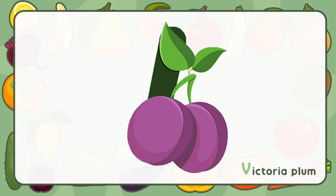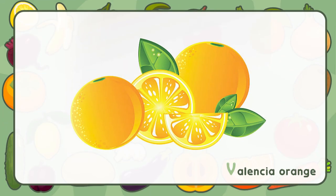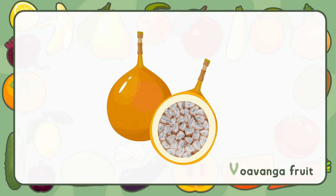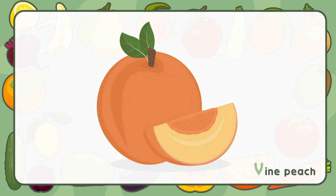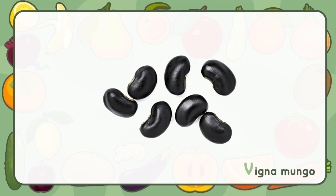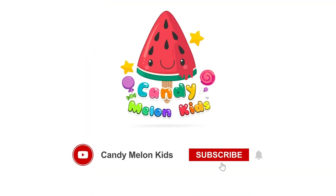Victoria Plum. Velvet Apple. Valencia Orange. Vavingay Fruit. Vovonga Fruit. Veldt Grape. Vine Peach. Vanilla Bean. Vigna Mungo. Vietnamese Gak Fruit. Vigna Mungo.